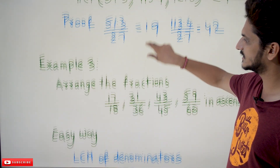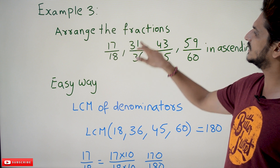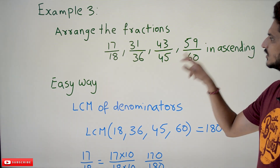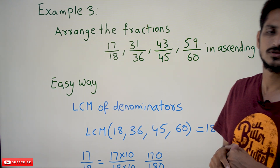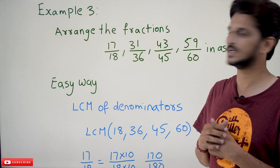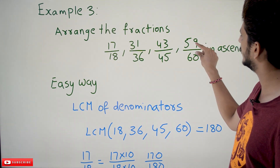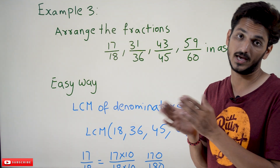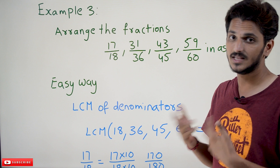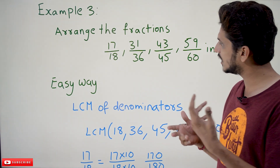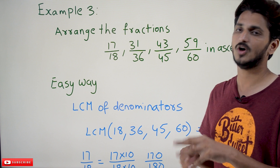Now coming to the third and last example: arrange the fractions 17/18, 31/36, 43/45, 59/60 in ascending order. The usual way is to find the decimal value of each fraction and then arrange them — but that is a lengthy method. There is a shortcut using LCM, and that is the key point to understand.